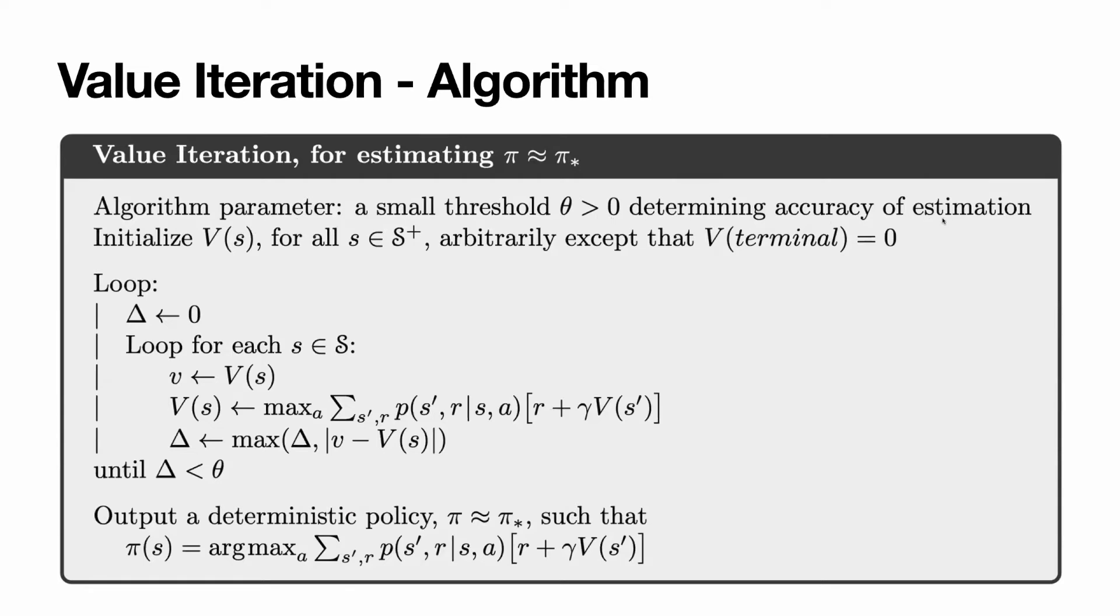determine desired accuracy of estimation of the optimal policy. Then we initialize values for all the states with some defaults. Then for all states, except the terminal, value of the state is zero. Here is the algorithm itself. I will comment it and then show the implementation of it. So in a loop, until the convergence limit is reached, do the following.